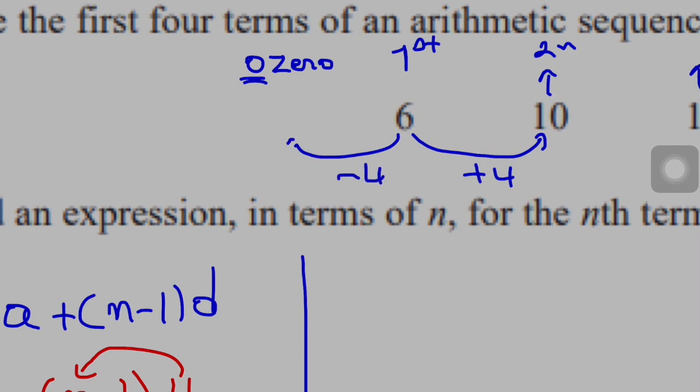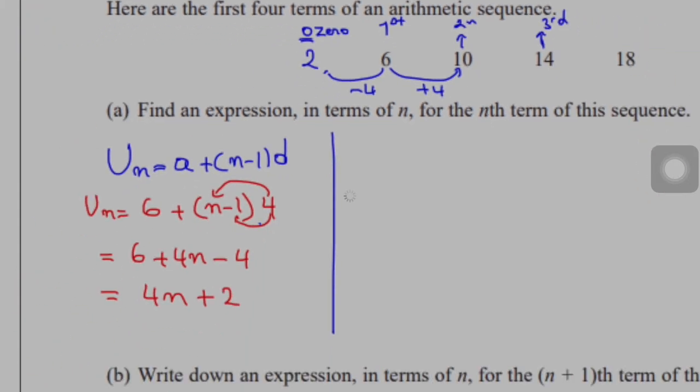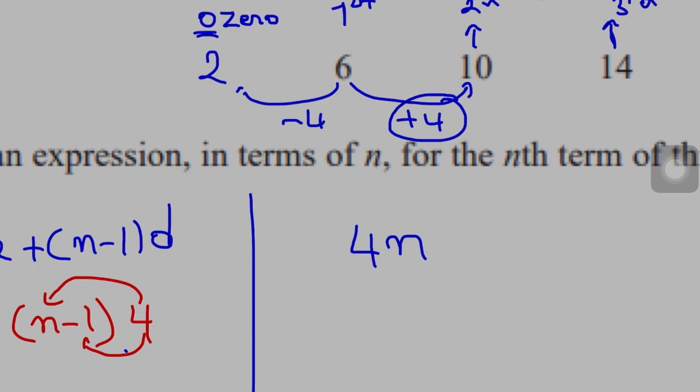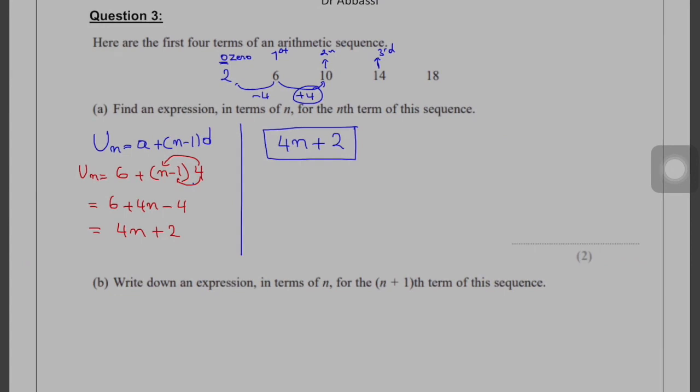I know that the common difference is 4, so I can easily just write 4n, which is d times n, plus the zero term, which is 2. In both ways, I'll get the full mark.